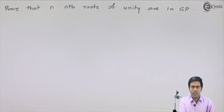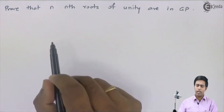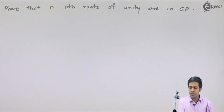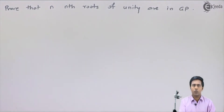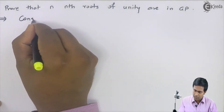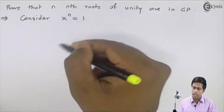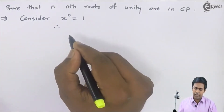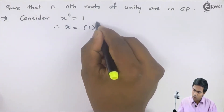Let's see one more question based on roots of complex numbers. The question is: prove that nth roots of unity are in GP. Unity is nothing but 1, so nth roots of unity means nth root of 1. To find it, we consider x raised to n equal to 1, and taking the nth root on both sides gives x equal to 1 raised to 1 upon n.